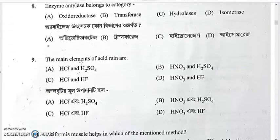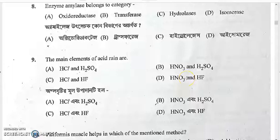Question nine: the main elements of acid rain are nitric acid (HNO₃) and sulfuric acid (H₂SO₄). The answer is option B. Sulfur dioxide reacts with water to produce H₂SO₄, and nitrogen oxides produce HNO₃.